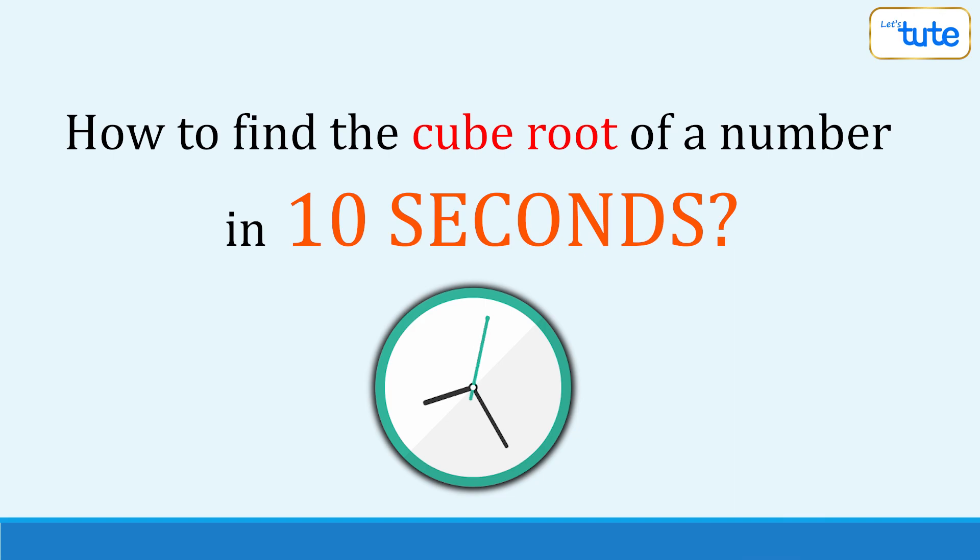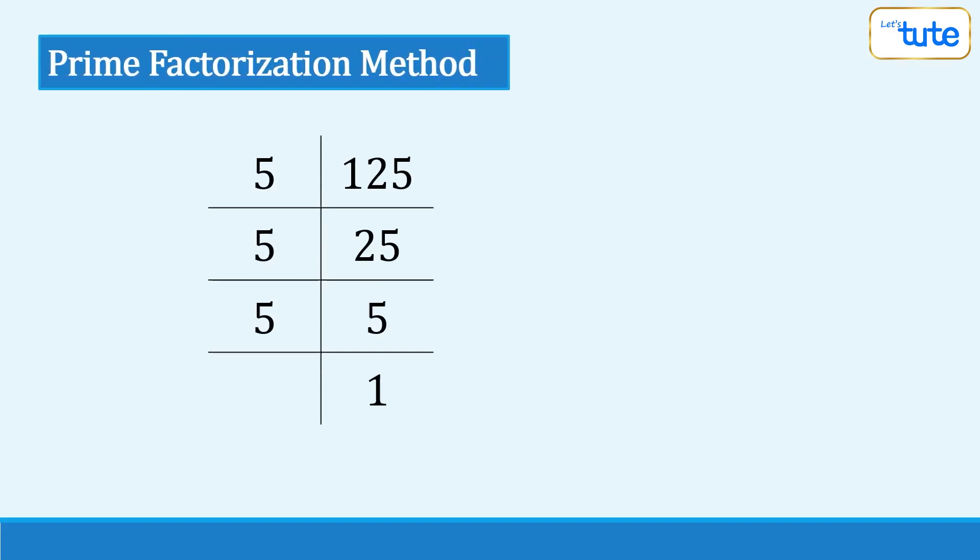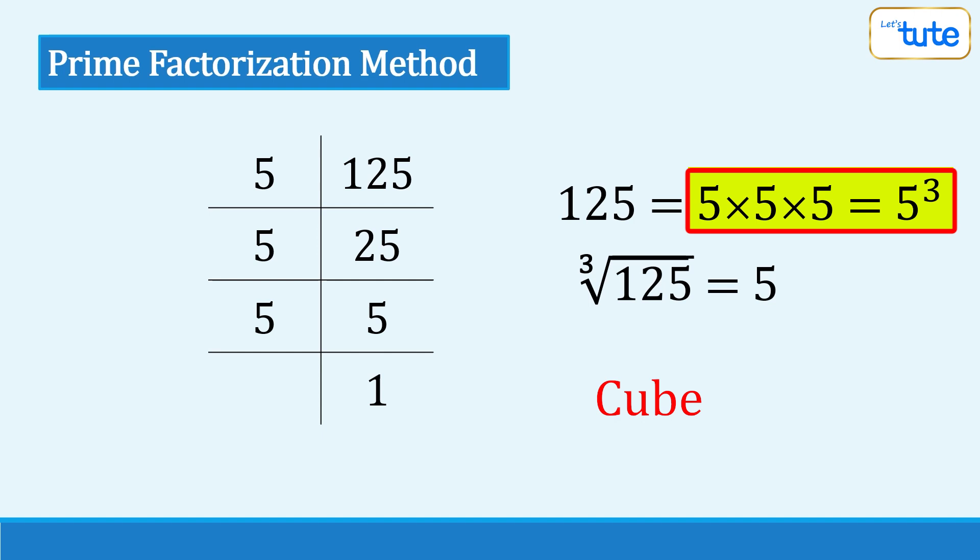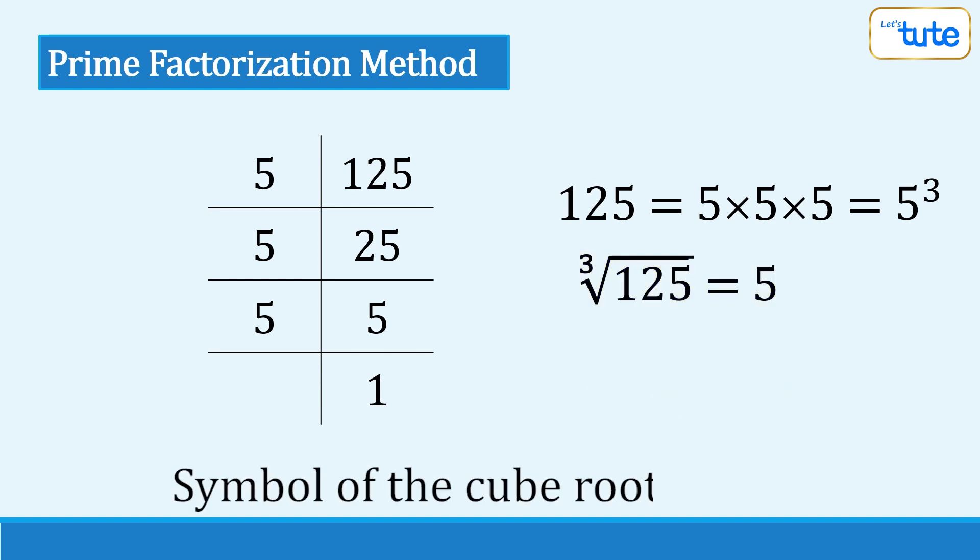As we all know, we can find the cube root using the prime factorization method, but for larger numbers, it will be tedious and time-consuming. So without further ado, let's get started. We all know that cube means multiplying the same number thrice and the cube root of a number is nothing but the number itself. So there are a few things we should know before we begin with the trick.